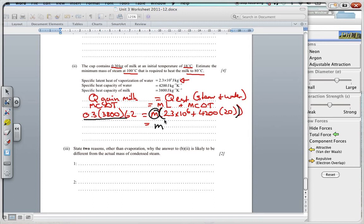So, let's do that on our calculators. We can do it in one go. So, we open brackets, and we have 0.3 times 3800 times 62, close brackets, divided by open brackets, 2.3 exponents 6, plus 4,200 times by 20, close brackets. And, we say equal, and we get an answer there of, I'll just write out in full first, 0.02964 kilograms.